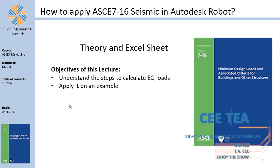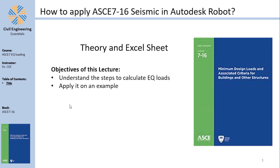Hello everyone and welcome back to the second part of our video series talking about seismic calculations via the ASCE 7 and its application in Autodesk Robot. In today's video we are going to be talking about vertical distribution and horizontal distribution, because those are the things needed to be done if you want to do a manual calculation of seismic loads on a structure.